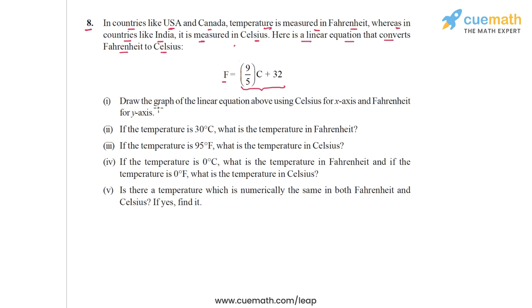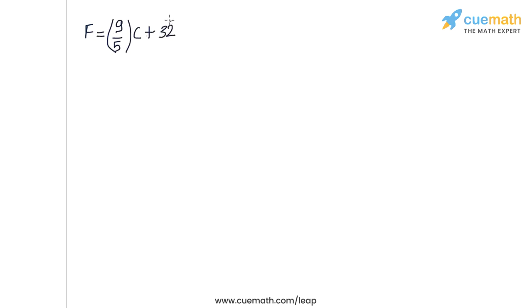The first question asks us to draw the graph of the linear equation using Celsius for the x-axis and Fahrenheit for the y-axis. The equation is F = 9/5 × C + 32. To graph this, we find two specific solutions by giving two values to variable C and finding the corresponding values of F.